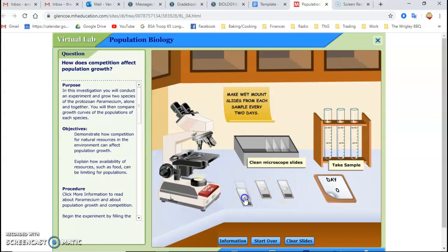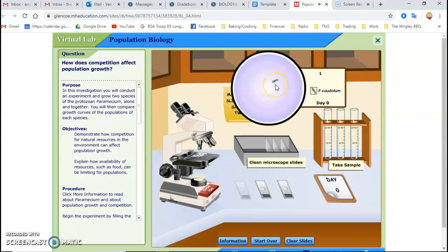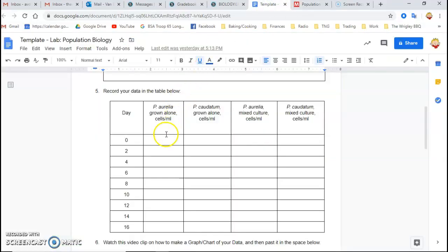And so now you grab the slide, put it on the microscope, and here's what you see. So on day zero, we have one paramecium caudatum. So I'm going to go over here. This is day zero, one paramecium caudatum in test tube one.